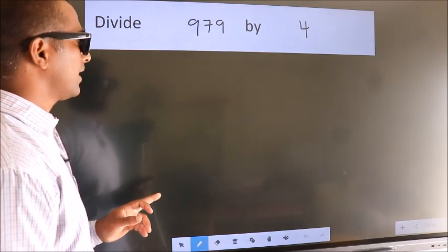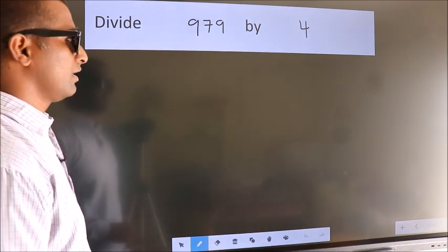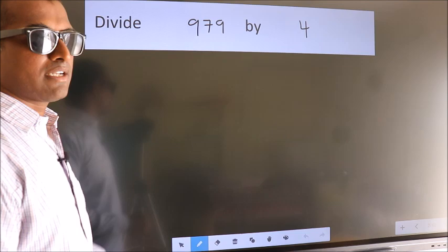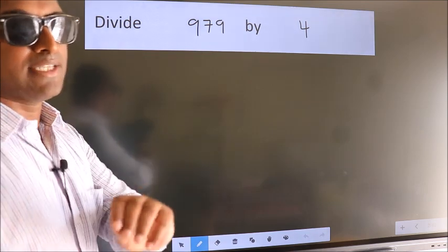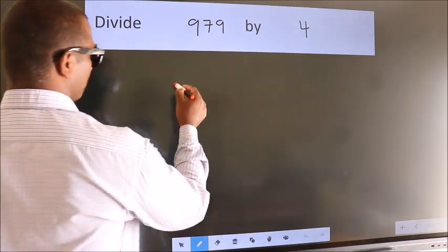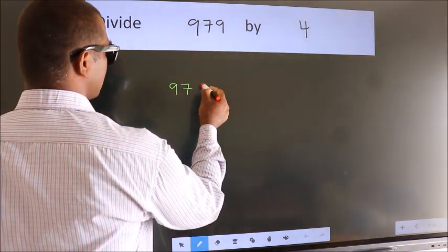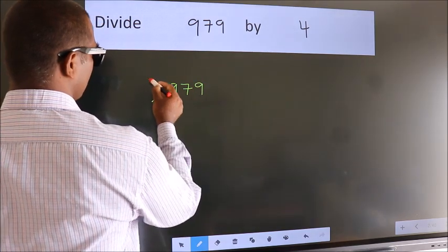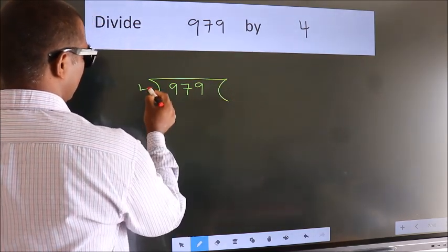Divide 979 by 4. To do this division, we should frame it in this way: 979 here, 4 here.